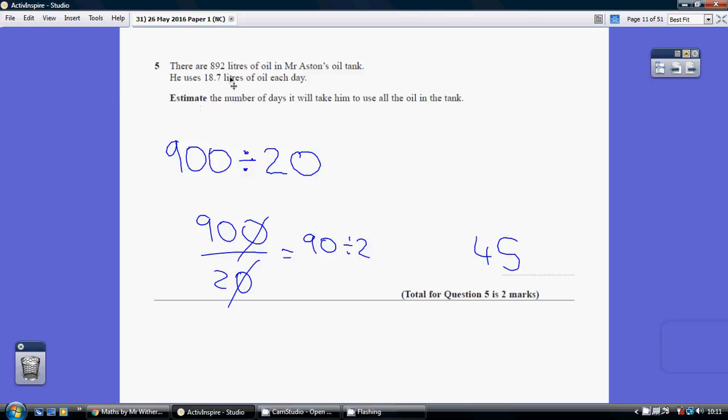So start off. Take the information you're given and round this to one significant figure. In other words, only one digit which is not a nought. Well, 892 to one significant figure is 900.